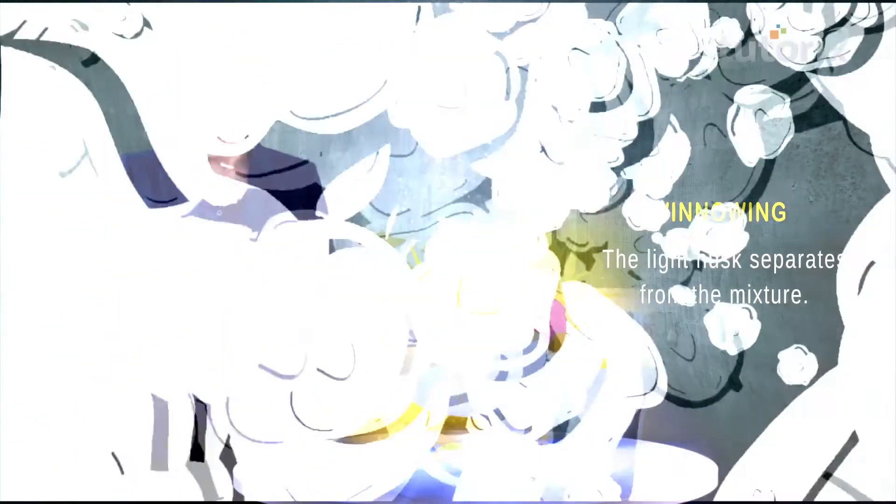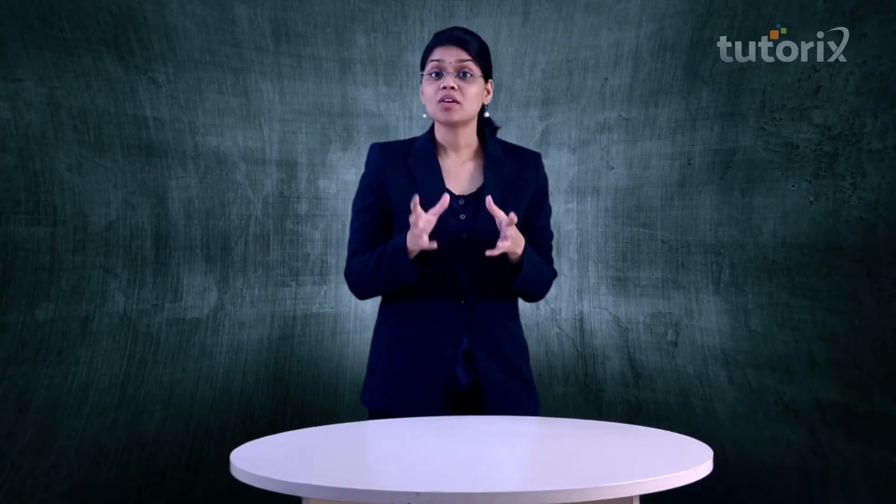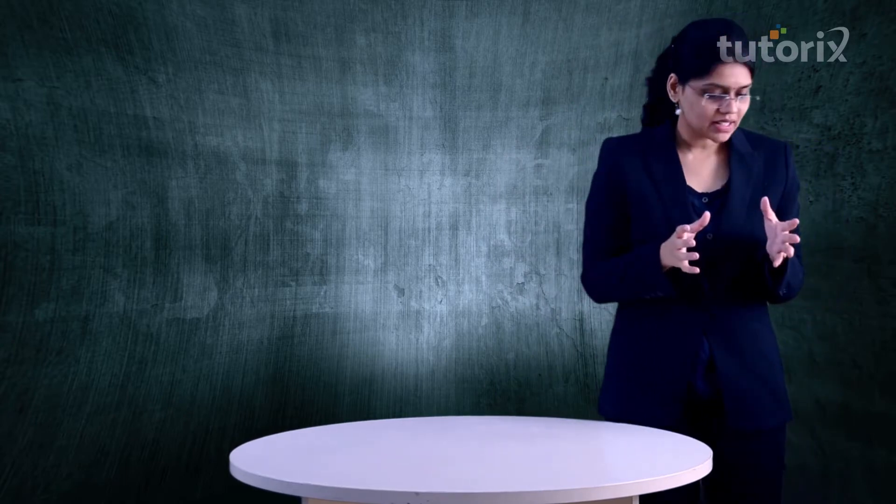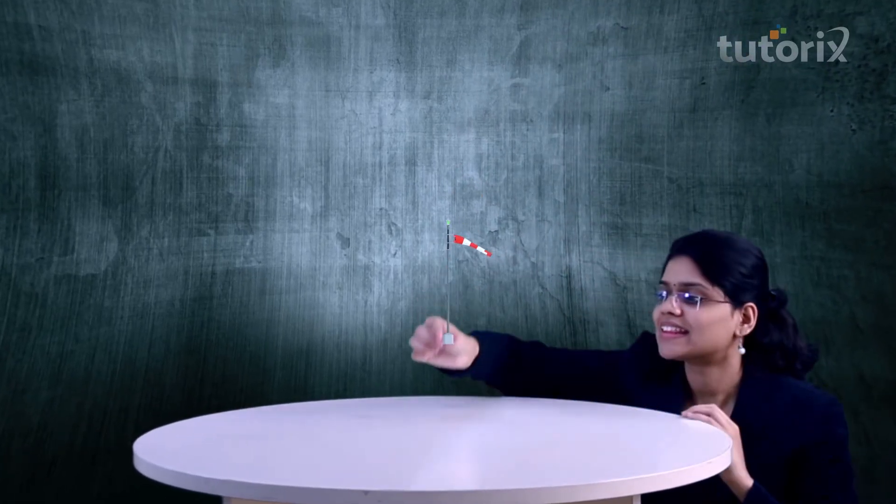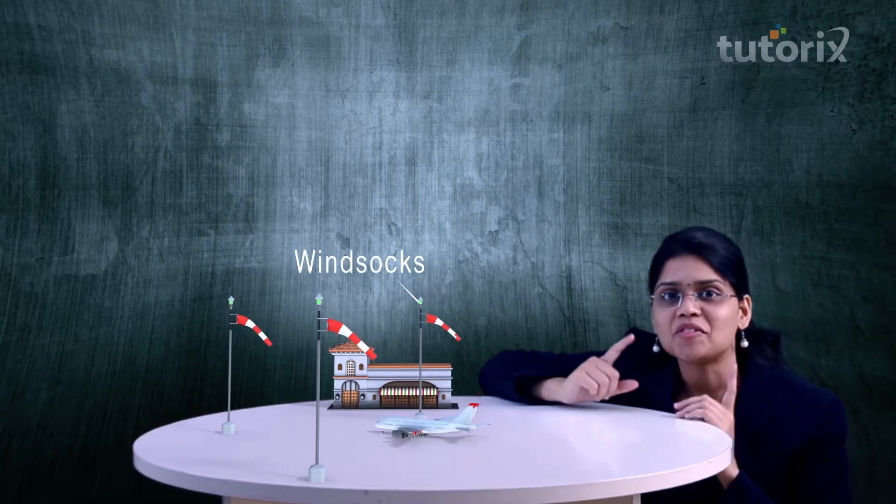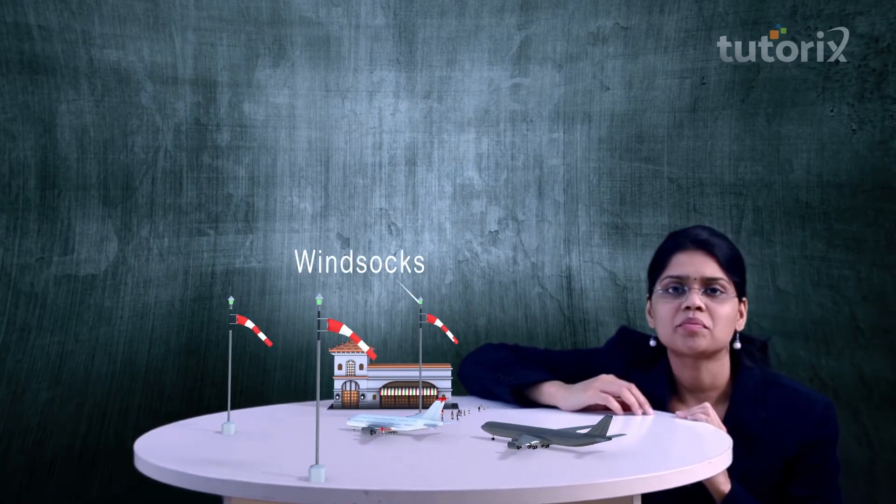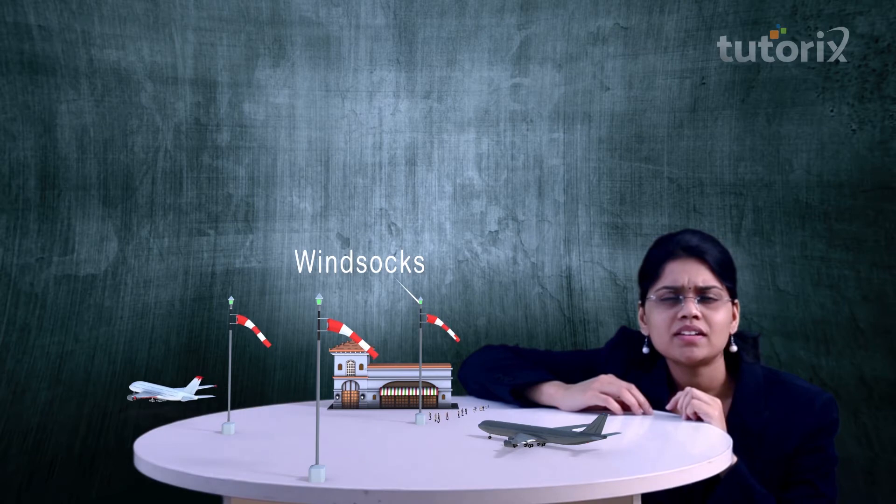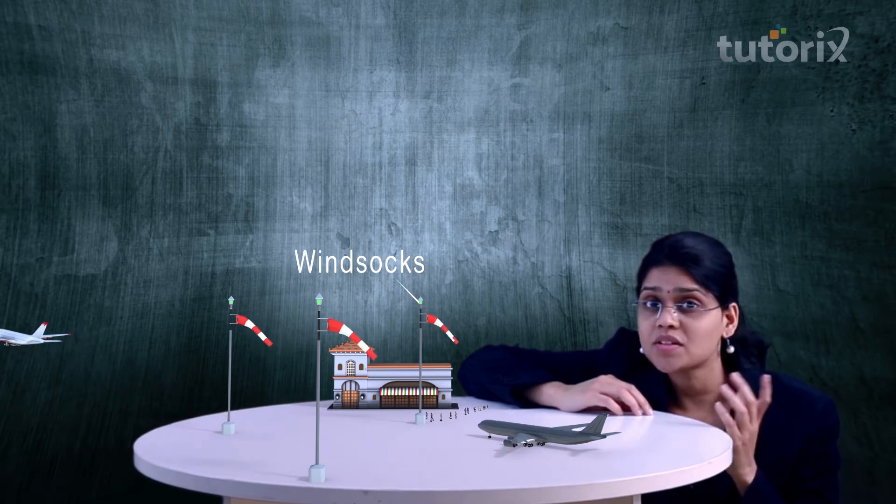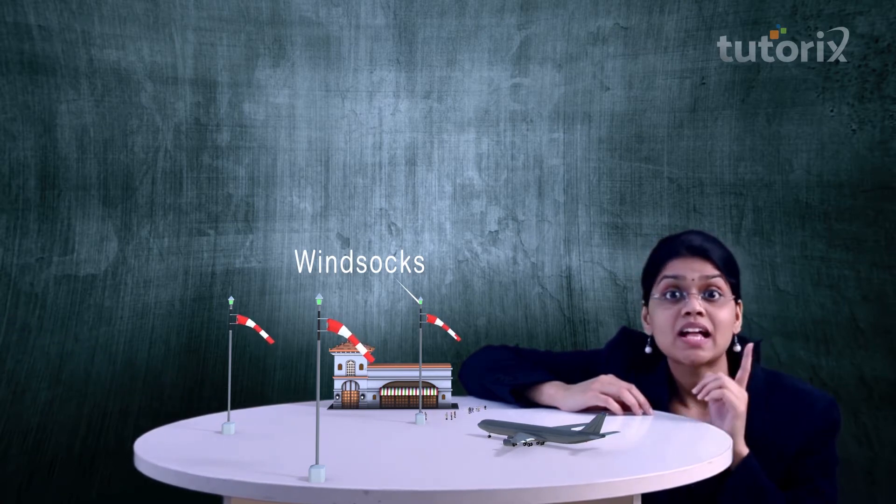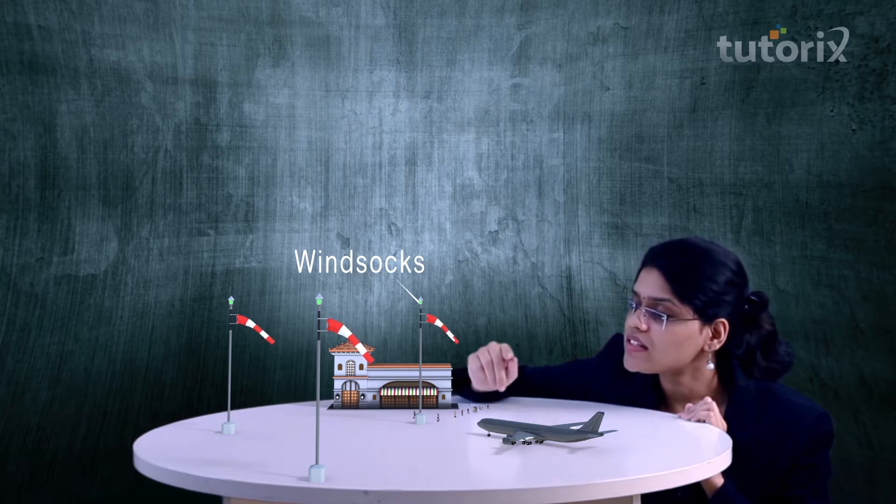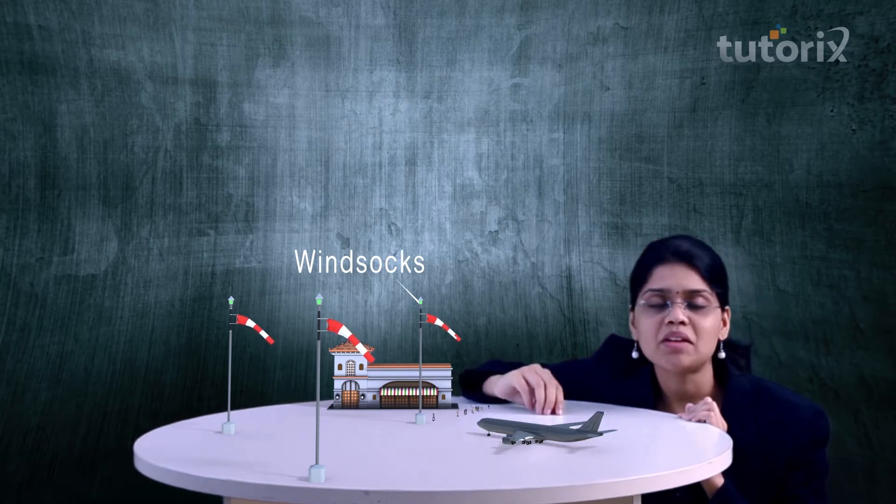Here, the light husk is separated from its mixture. Now, have you noticed some orange and white striped wind socks at airports? It looks something like this. A wind sock is placed near the runways at airports. It helps pilots make critical decisions regarding landing and take off. But how do they do that? This is because a wind sock flies in the direction of the wind.